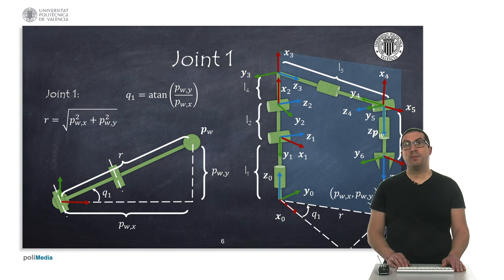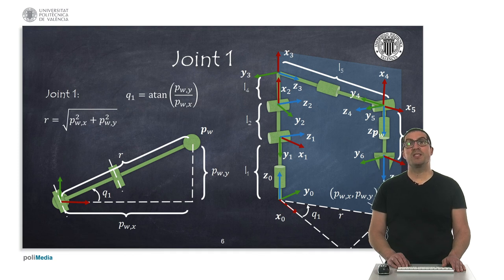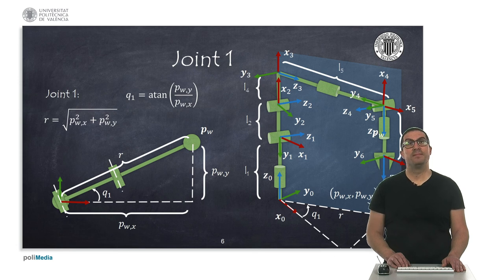Now, the problem can be seen as a coplanar robot problem, since the other two joints will be contained in the same plane, as highlighted in the figure on the right. The problem is now to find the values for Q2 and Q3 such that the wrist is separated by the distance R in such plane.